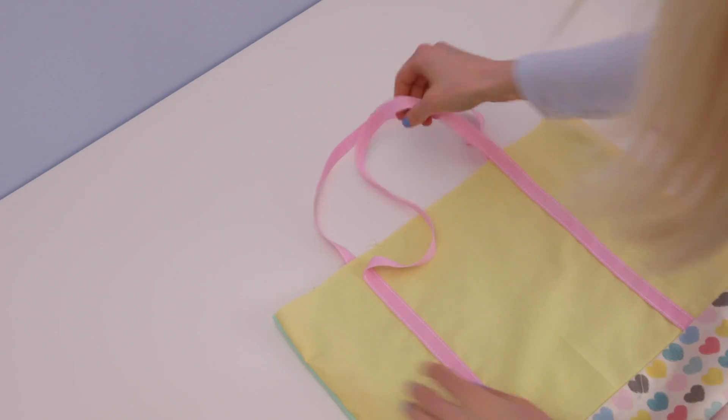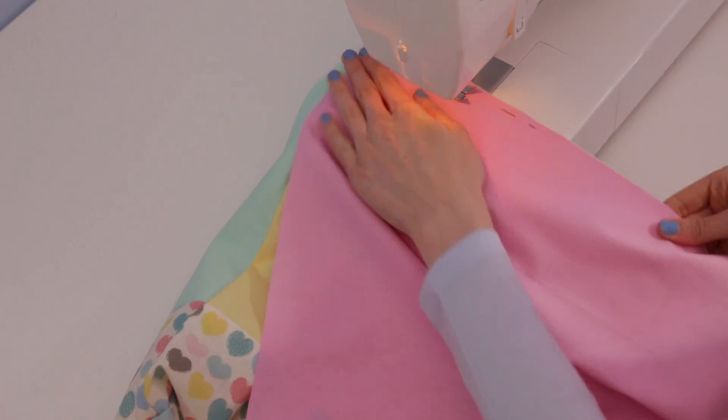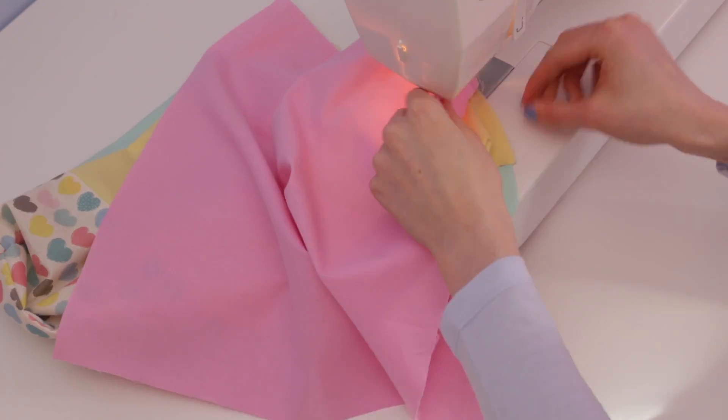Now I'm going to take one of my pink fabrics, lay it on top of the yellow, pinning it to just the yellow fabric on the top edge. Sewing it together. Then I lay the other pink fabric on the green side, and repeat the same step.